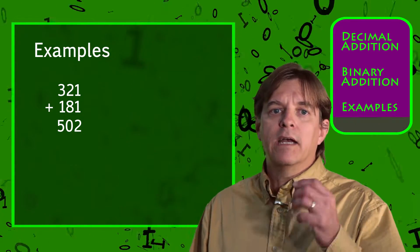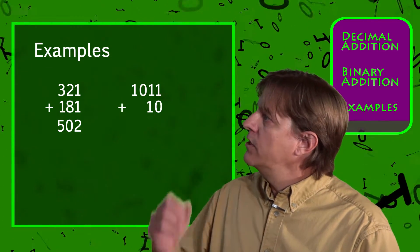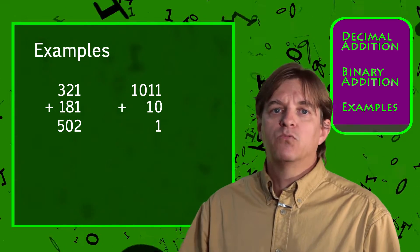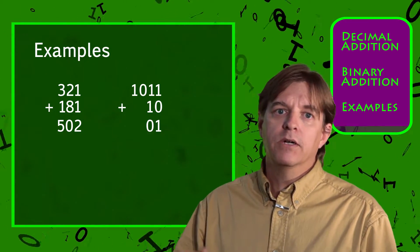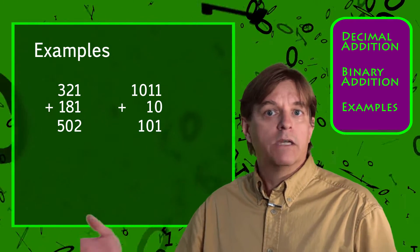Similarly, in binary, we'll look at 1011 plus 10. Starting with the units on the right, 1 plus 0 equals 1, 1 plus 1 equals 10, so write 0 and carry a 1, 1 plus 0 equals 1, and 1 plus 0 equals 1 again.